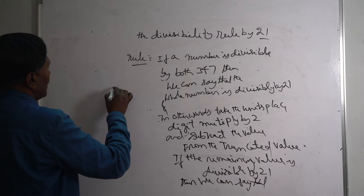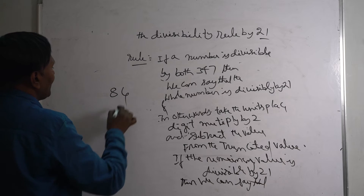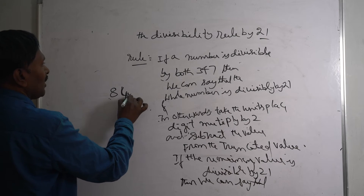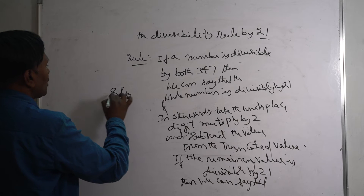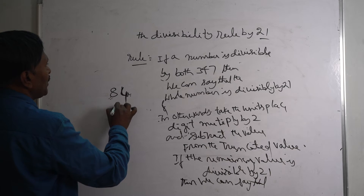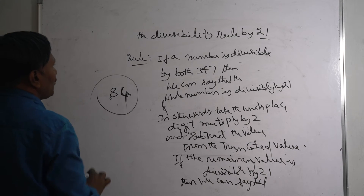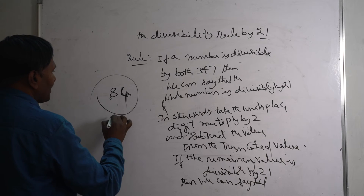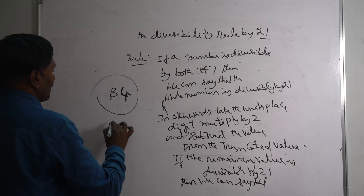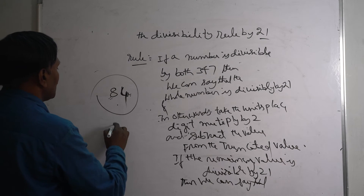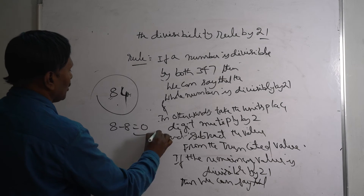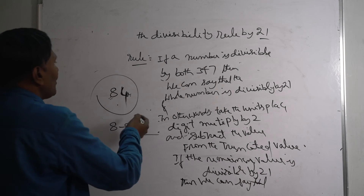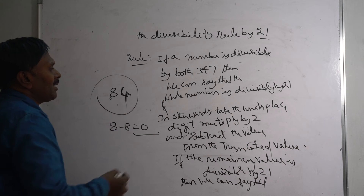Let's try 84. The digit sum: 8 plus 4 is 12, which is divisible by 3. 84 is also divisible by 7. So 84 is divisible by 21. Applying the other method: 4 into 2 is 8, and 8 minus 8 equals 0, which is divisible by 21.